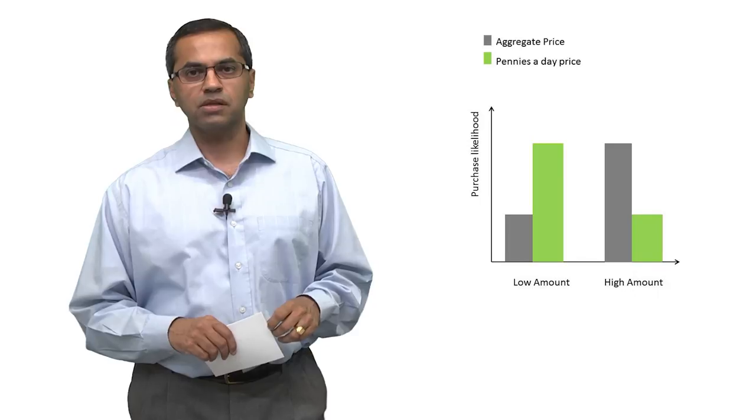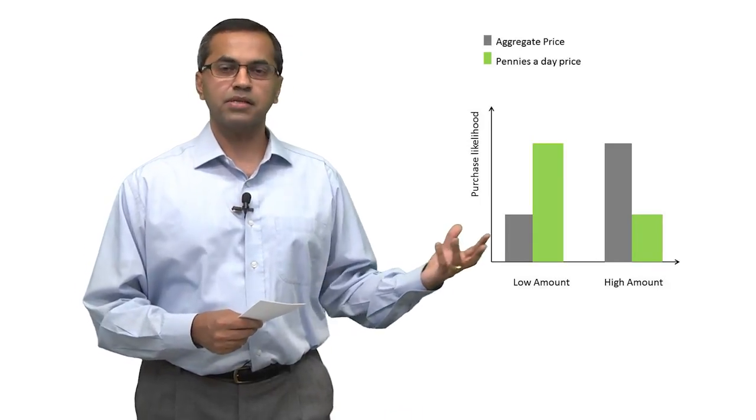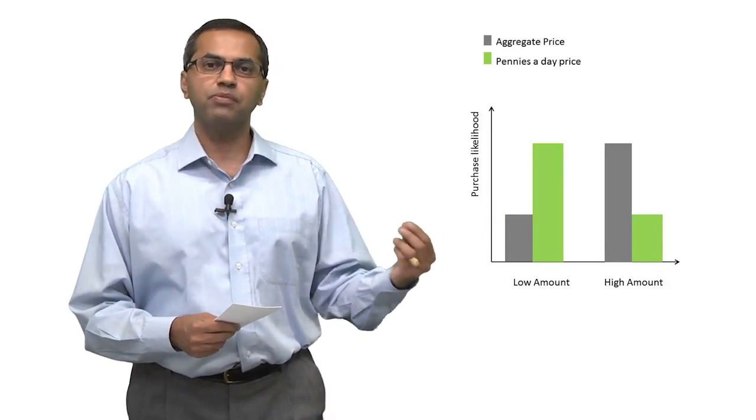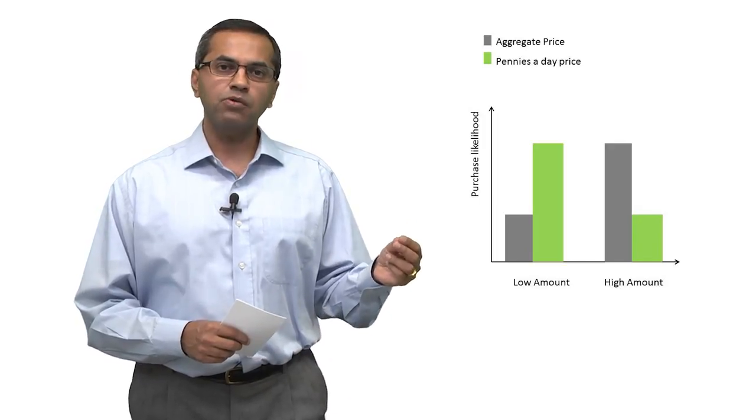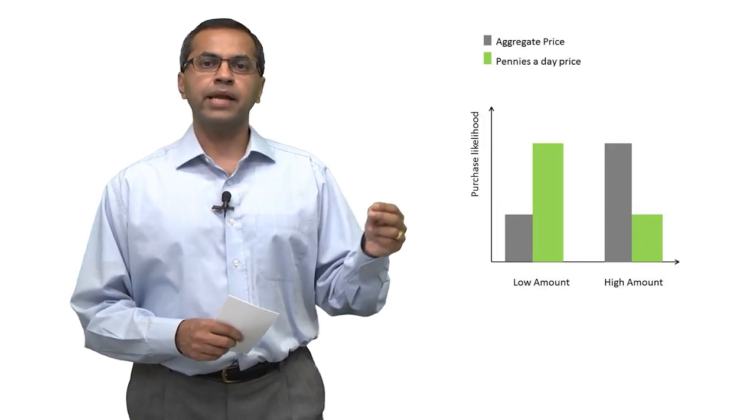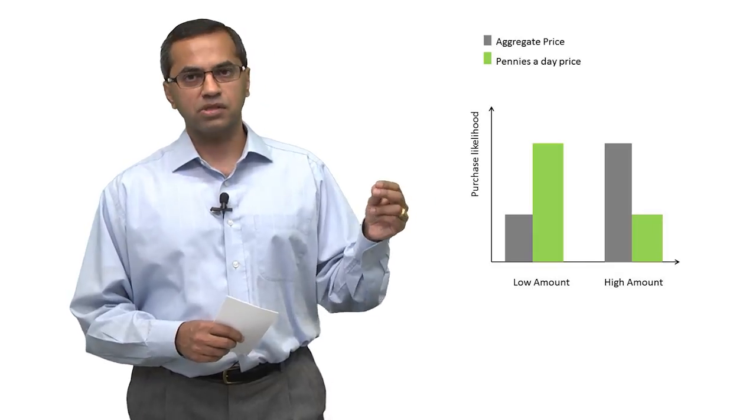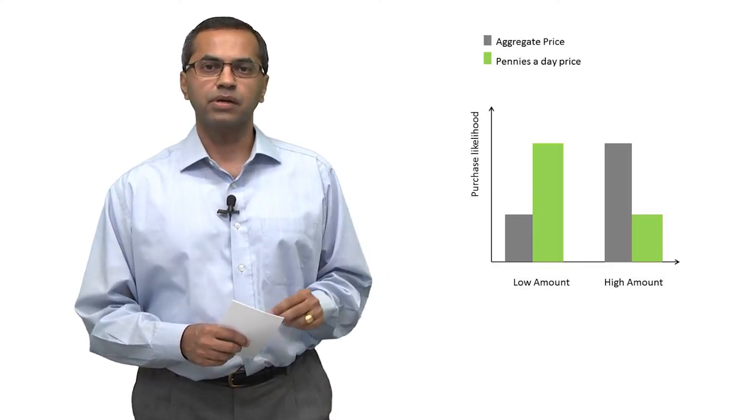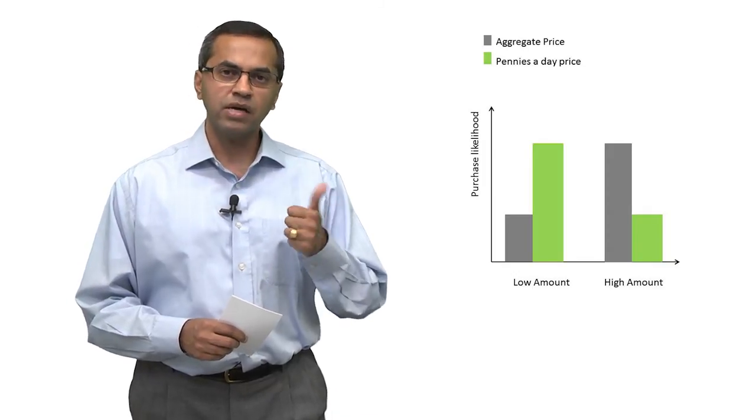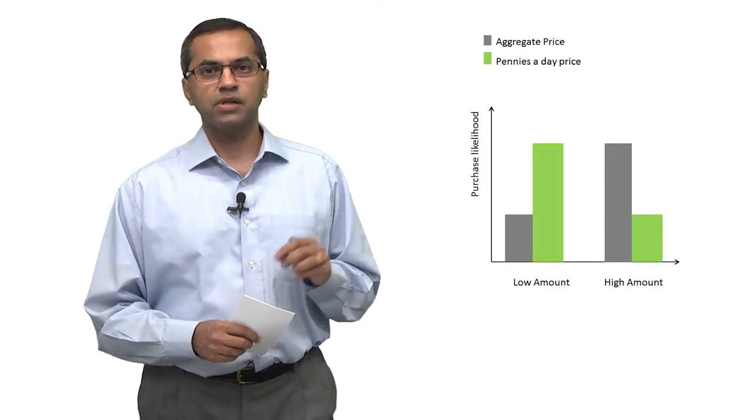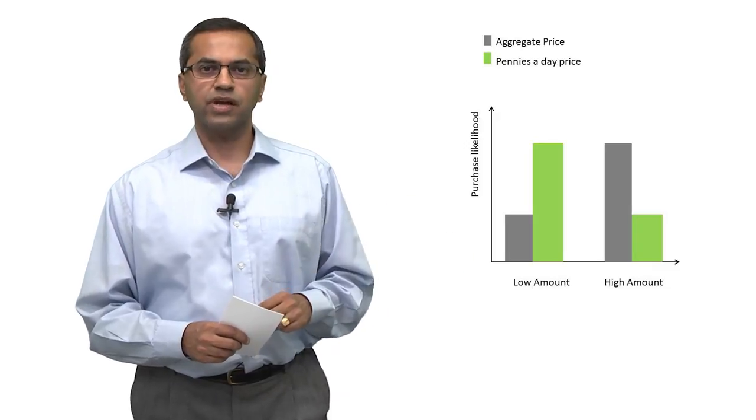Here's a second situation. This is really not hypothetical, but it is basically a graph drawn from the experiment that we talked about earlier. It shows that when the amount is low, pennies-a-day dominates. When the amount is high, the aggregate frame dominates. In this case, the presence of the second variable has reversed the original effect, resulting in an interaction effect.